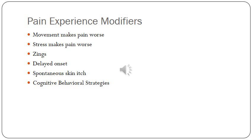Different things can also modify the pain experience. These are things you may witness with a patient or hear in an assessment when discussing what makes pain worse or better. Movement can often make pain worse, particularly when nerves get impinged. You have to be careful with individuals who compensate by putting themselves in bad positions — encourage good mechanics right away. For instance, if someone is limping and bending their spine, you want to correct that as quickly as you can.